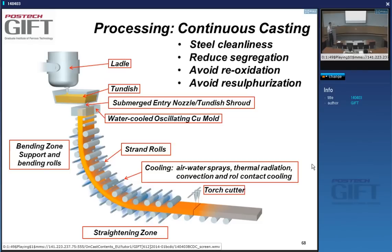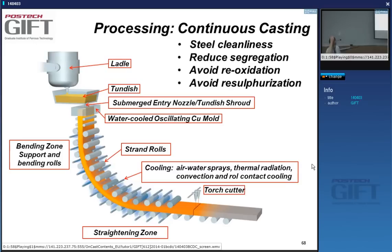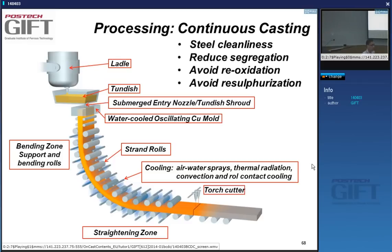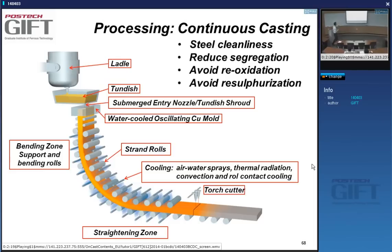Compositional and microstructural homogeneity of the material is much better in the case of continuous casting. You still do a lot of ingot casting, but those are usually used in the area of forgings. It's not a very large amount of steel production that goes into ingot casting. We'll focus on continuous casting because 95% or more of the steels are actually made by continuous casting.